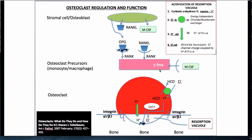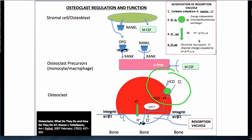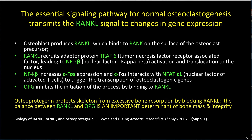The acidic environment in the resorption vacuole is created by the following. For the hydrogen ions, production inside the cell by carbonic anhydrase 2, and then transmembrane delivery via an H+-ATPase pump. For the chloride, delivery into the cell in exchange for bicarbonate via an electroneutral chloride-bicarbonate exchanger, and then transmembrane delivery by an ion channel charge-coupled to the H+-ATPase.